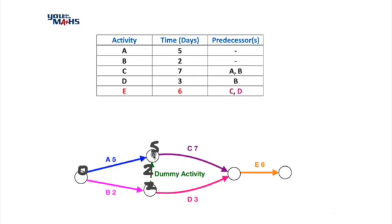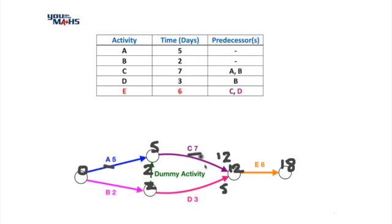Moving across the top, 5 plus 7 is 12 — that's the time to complete activity C. Across the bottom, 2 plus 3 is 5 for activity D. To start activity E we need both C and D completed, so we place 12 on that node, and 12 plus 6 is 18 days. The best time to complete this project is 18 days and the critical path runs through activities A, C, and E.